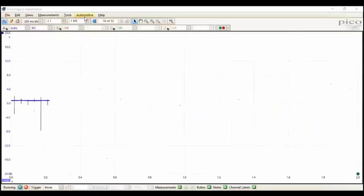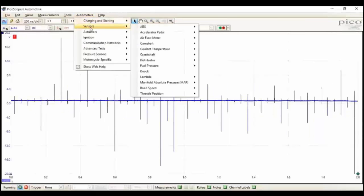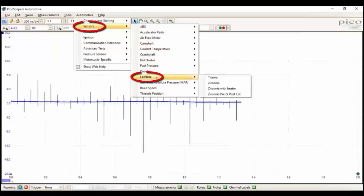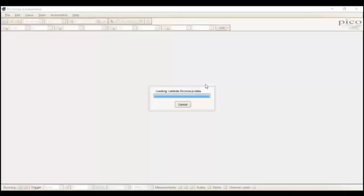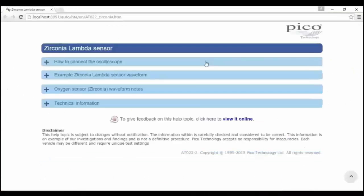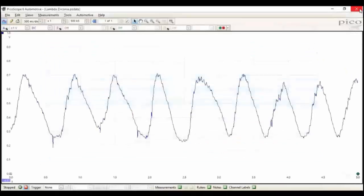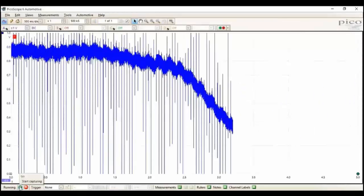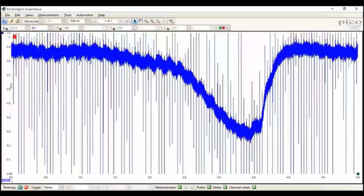Now we're going to look at the typical lambda sensor, so automotive sensors, lambda, and then zirconia. A notorious sensor for noise. Here's the help file just explaining what it should look like. But in reality, we all know that when we press the record button, there we have it. Notoriously noisy signal, 0.1 to 0.9 volt.